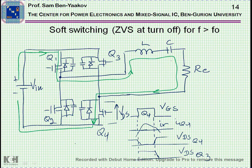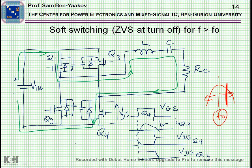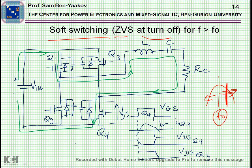Now, back to the question: what frequency is preferred — higher or lower than the resonant frequency? With MOSFET transistors, it is desirable to operate at a frequency above the resonant frequency. The reason is that in this range the current is lagging, and this helps to achieve soft switching — zero-voltage switching — at turn-off, reducing switching losses and increasing the efficiency of the converter.